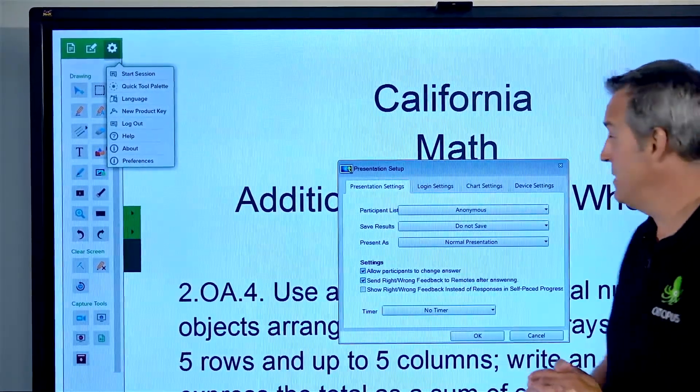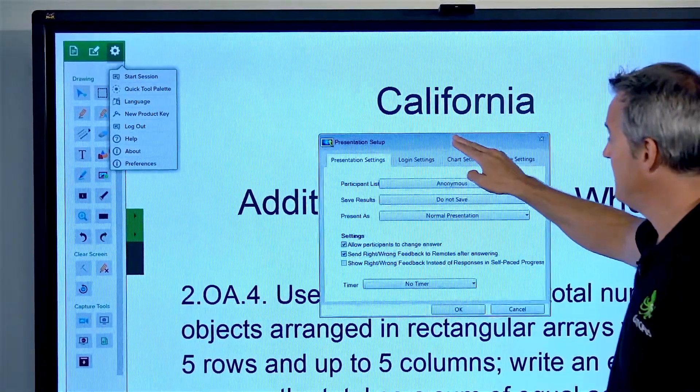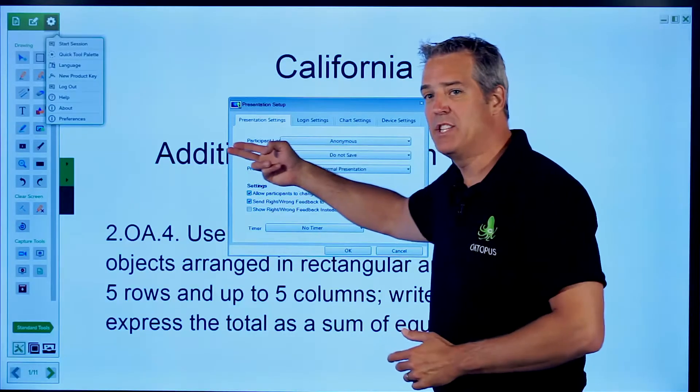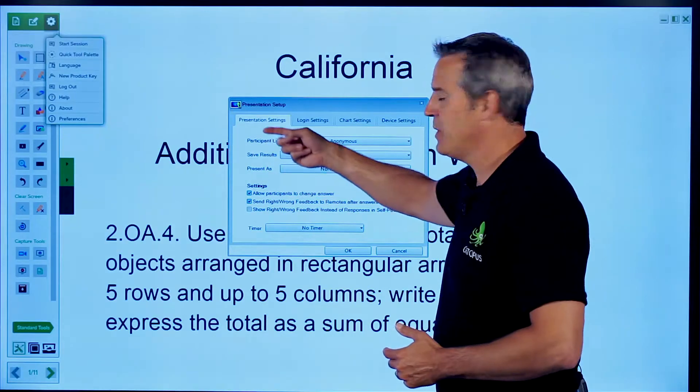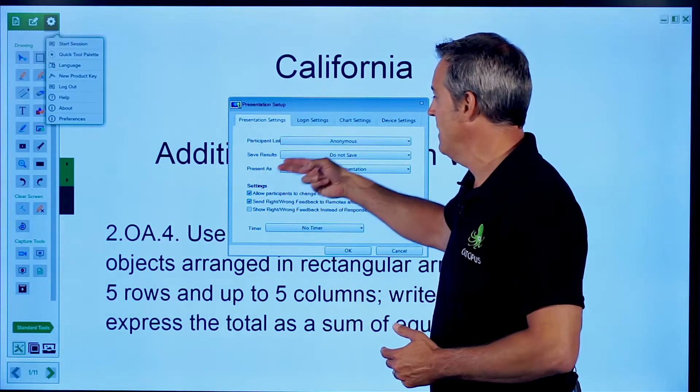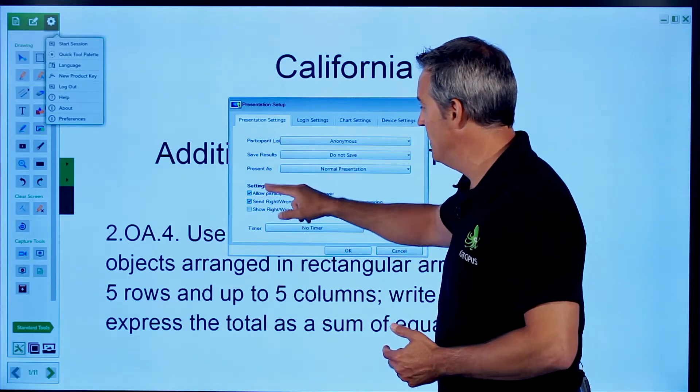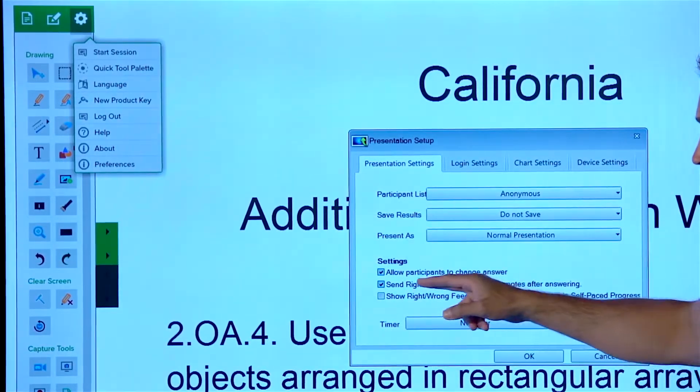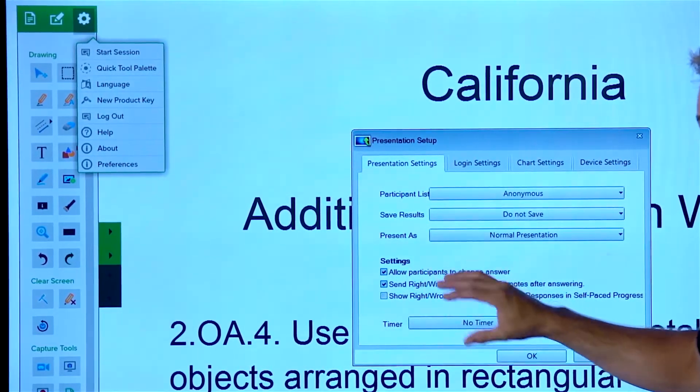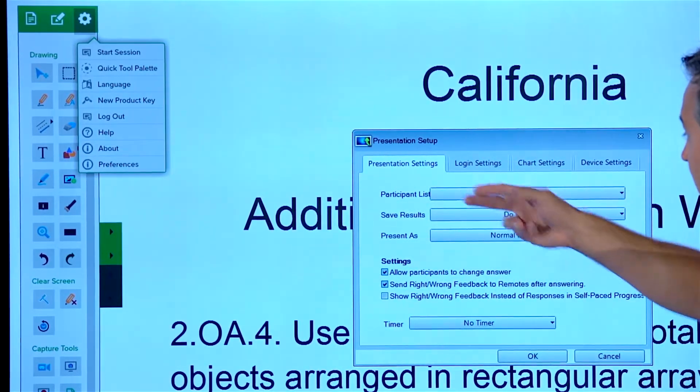So when I choose start session it's going to bring up a presentation setup dialogue and the main things that you want to pay attention to. I just really want to choose my class roster if I want to save the results and am I going to provide right and wrong feedback or am I going to allow them to change their answer. So no matter what this looks like you're going to have those options.